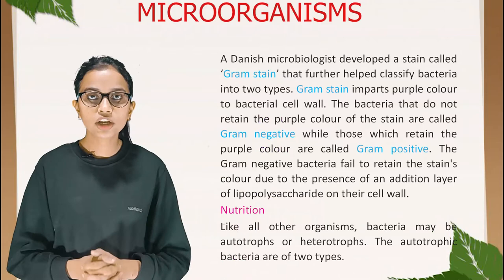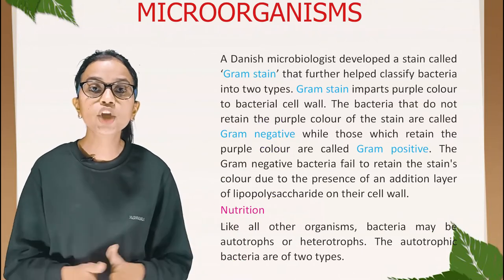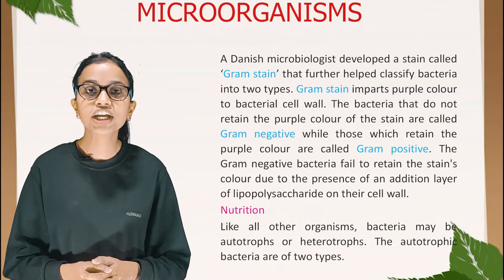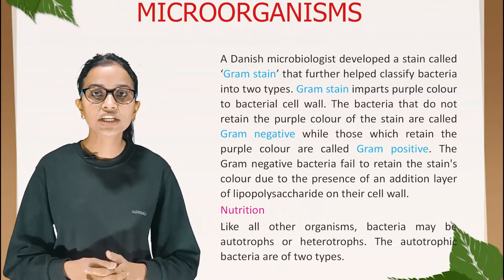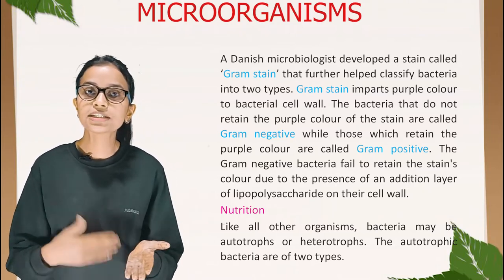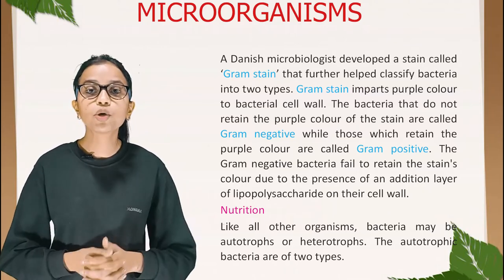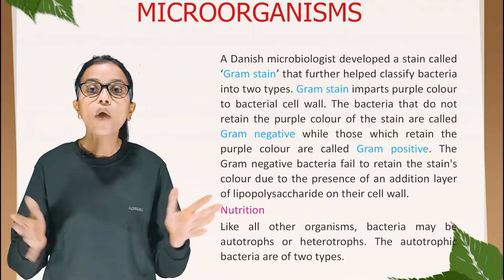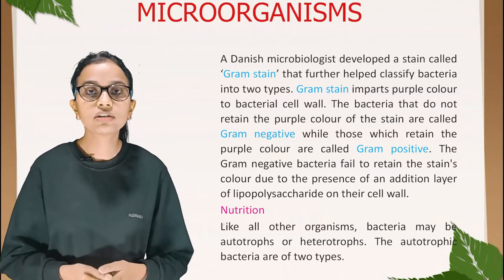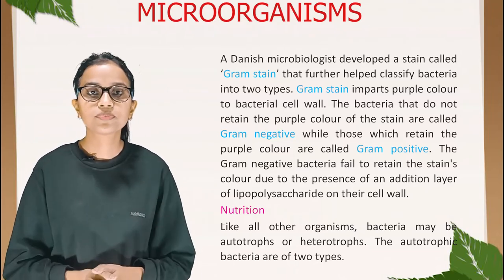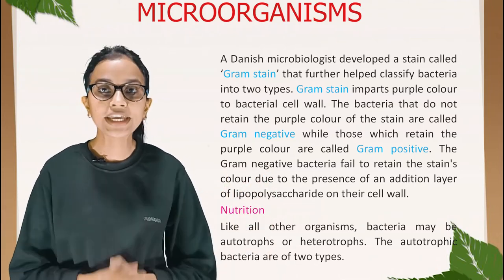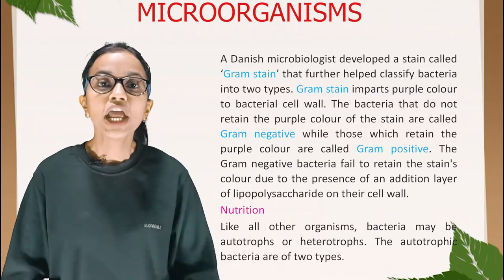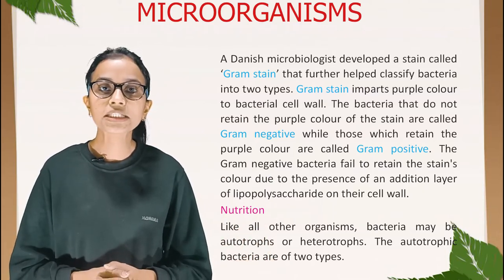A Danish microbiologist developed a stain called Gram stain that further helps classify bacteria into two types. Gram stain imparts purple color to the bacteria cell wall. Bacteria that do not retain the purple color are called Gram-negative, while those which retain it are called Gram-positive. Gram-negative bacteria fail to retain the stain's color due to the presence of an additional layer of lipopolysaccharide on their cell wall.